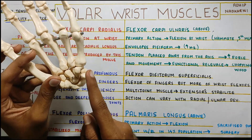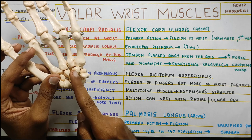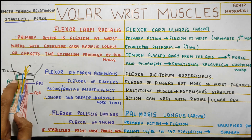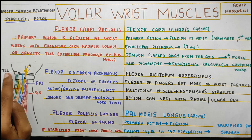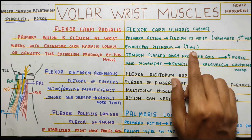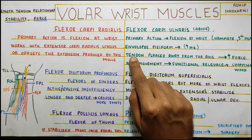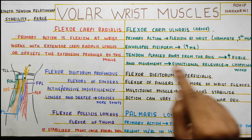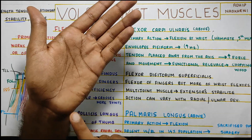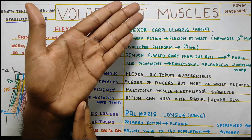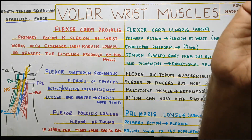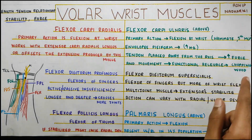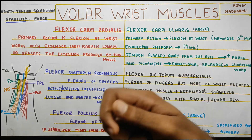The pisiform pushes the flexor carpi ulnaris even further away from your axis of rotation, which makes it more efficient. It increases the moment arm — the tendon is placed away from your axis, which increases force production and the ulnar deviation movement. This has good functional relevance because when you are chopping something, you will be using the flexor carpi ulnaris to generate that force. So chopping of wood is a key functional use of this muscle.